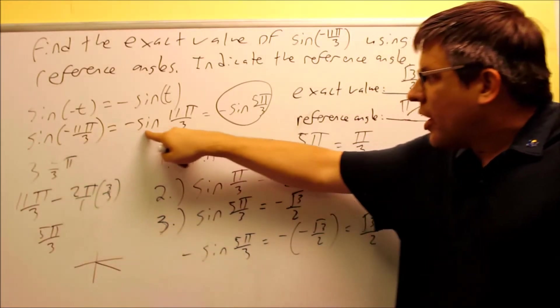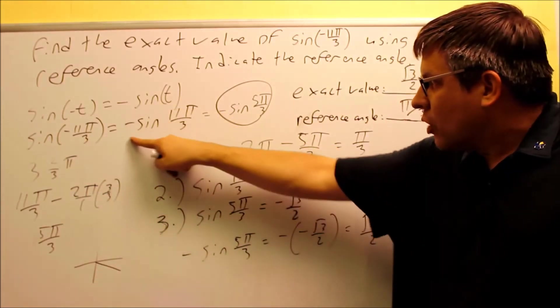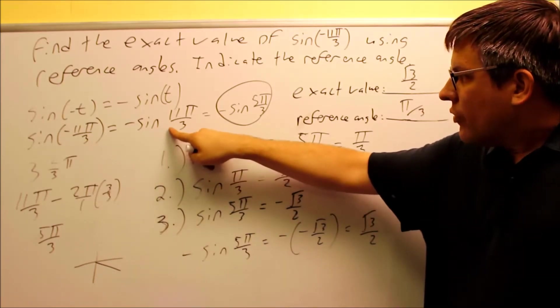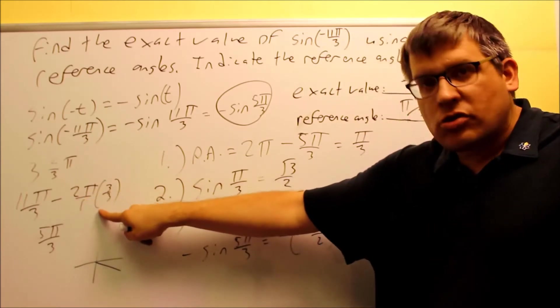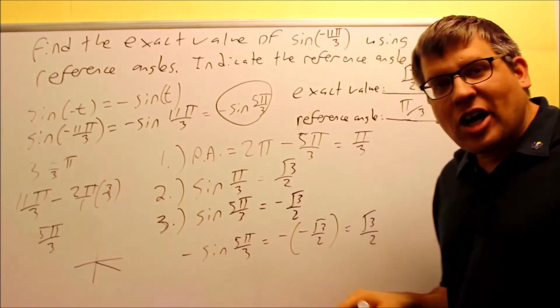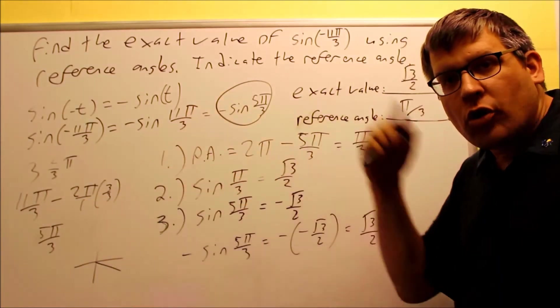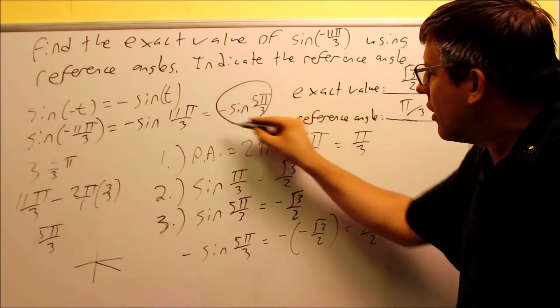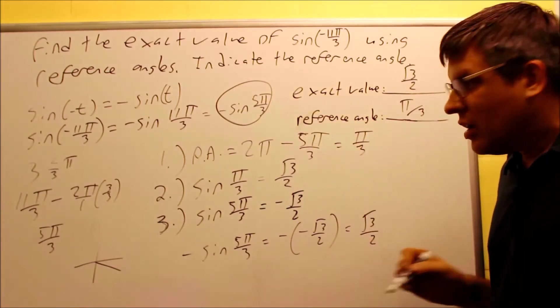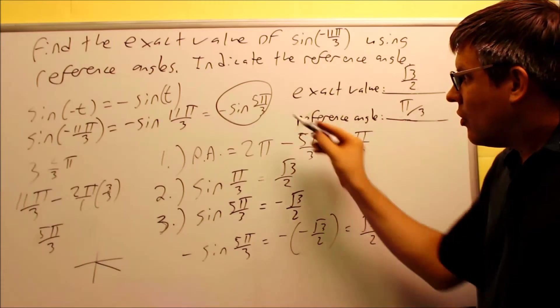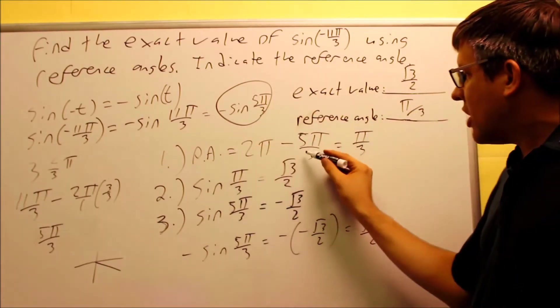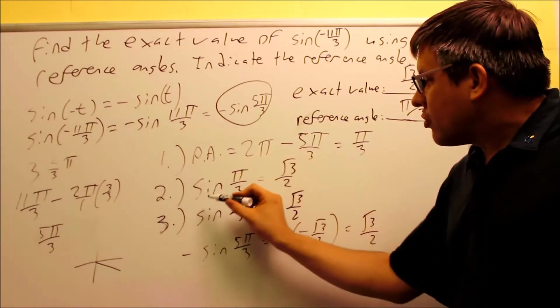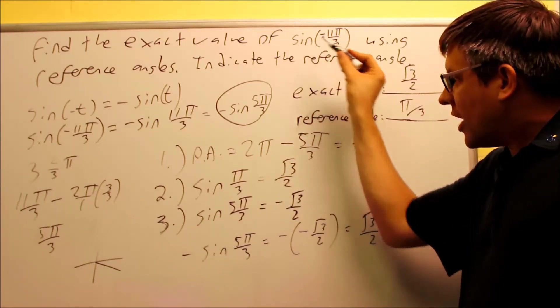It was originally sine of negative 11π over 3. We changed it by using the even and odd properties to get this one. We have a negative on the outside. We saw that 11π over 3, if I subtract one revolution from it, that would take me down to 5π over 3, so therefore I could ignore the extra revolution and break the problem down into this one that's circled. These three steps I did for sine of 5π over 3 only. So I found the reference angle, applied the trig function to that, the sine, positive sign.